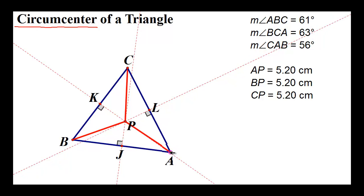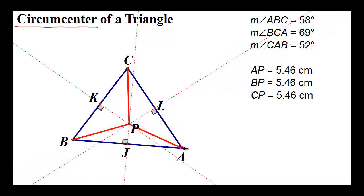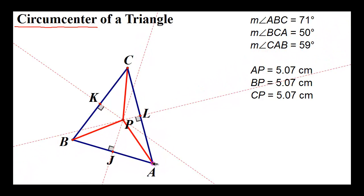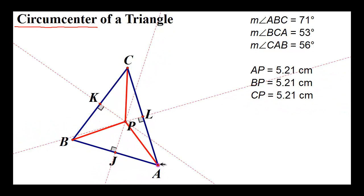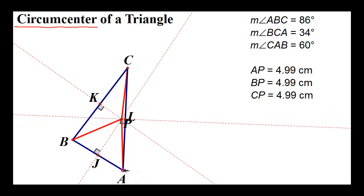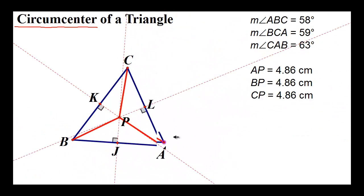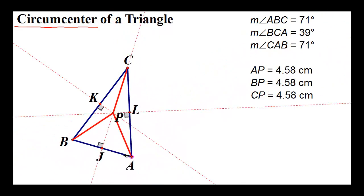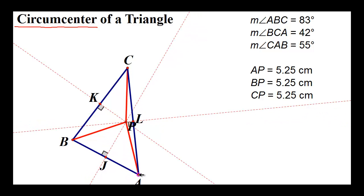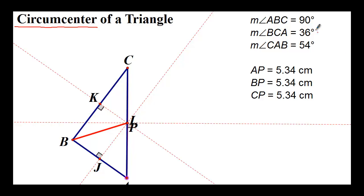Now notice what happens as I manipulate this triangle — point P is not staying in the middle anymore. As I continue pulling it over, the circumcenter lands right on a side. What's different about this triangle? Angle ABC, right here, is 90 degrees. So when the triangle is a right triangle, the circumcenter lies on the hypotenuse.